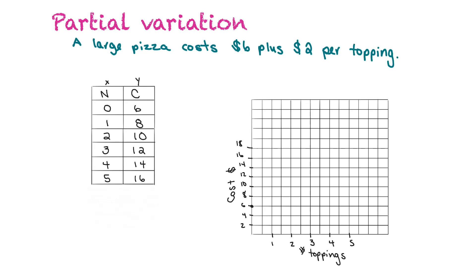Now we're going to plot the points. With zero toppings it costs six dollars, one topping costs eight, two toppings costs ten, three toppings costs twelve, four toppings costs fourteen, and five toppings costs sixteen dollars. Now we can draw our line of best fit.